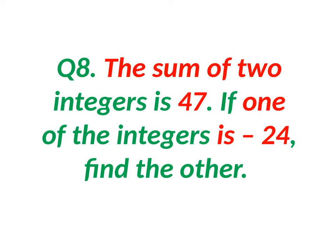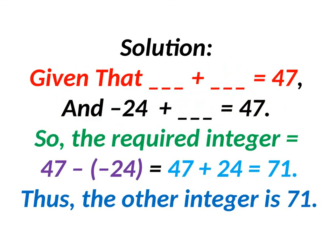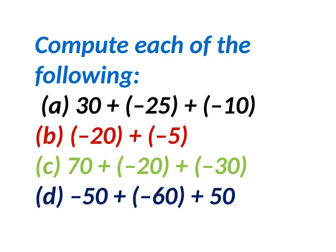The sum of two integers is 47, and one is minus 24. Find the other. We can visualize: dash plus dash equals 47, and minus 24 plus dash equals 47. So the required integer is 47 minus minus 24, which is 47 plus 24, equals 71. When you add both numbers, you will get it.